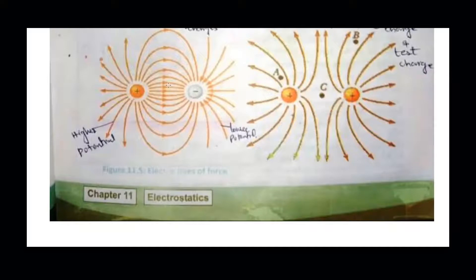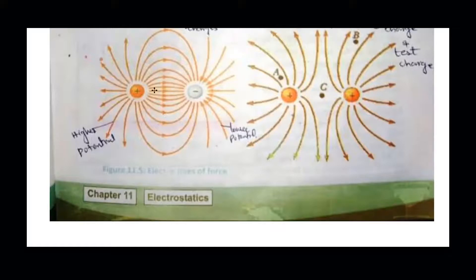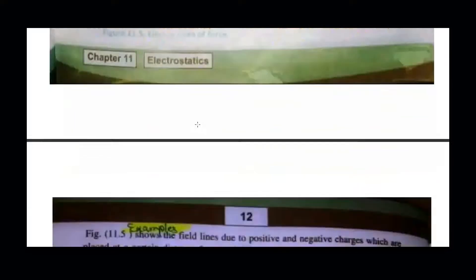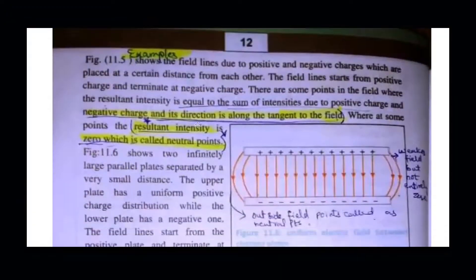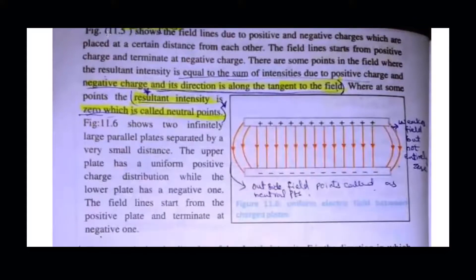The lines are very strong near the charges. Looking at figure A, the arrows at the central portion show that the strength of the electric field due to the positive charge and the negative charge are equal at that point, because they combine from all directions. The second example on page 12 shows field lines with resultant intensity zero, which is called the neutral point.